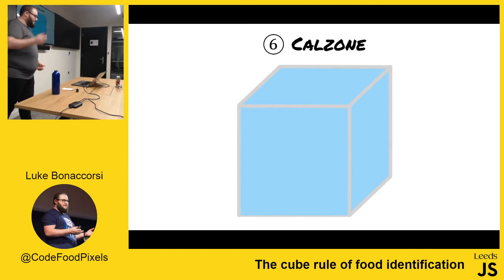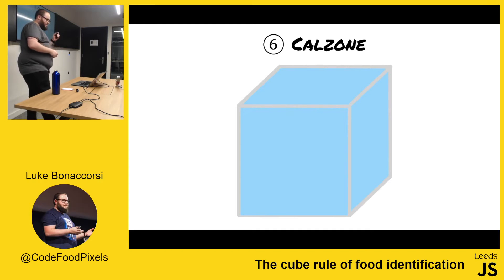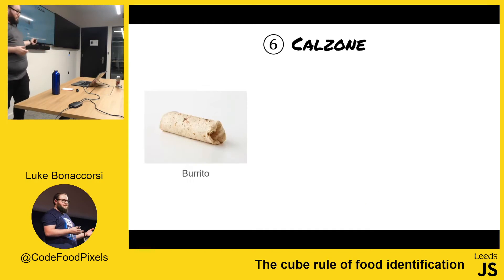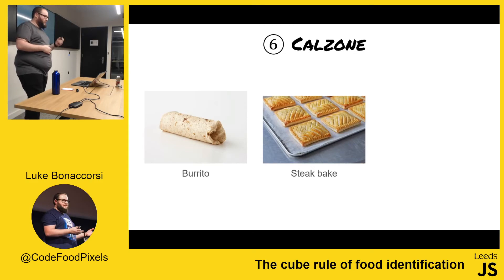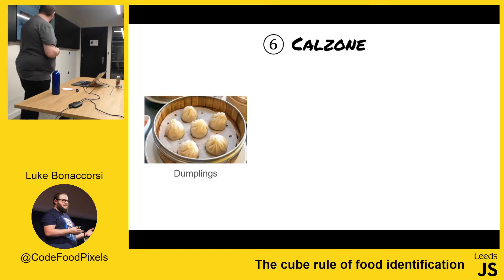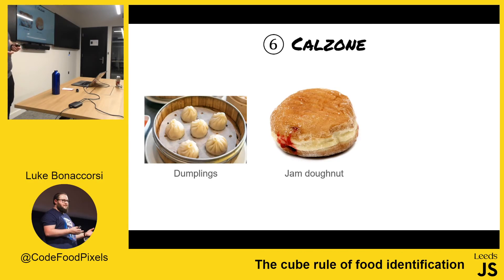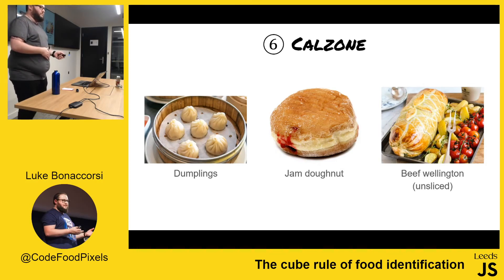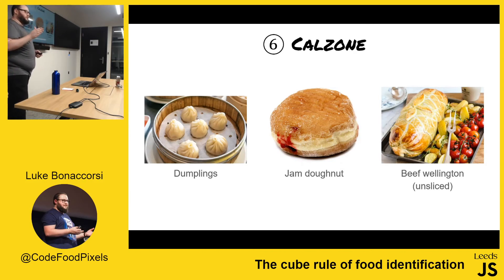And then we have calzones. Calzones are completely encased. So this means stuff like burritos, or steak bakes, or pork pies, and dumplings, and jam donuts. And a whole unsliced beef wellington. If you slice the beef wellington, it becomes sushi.